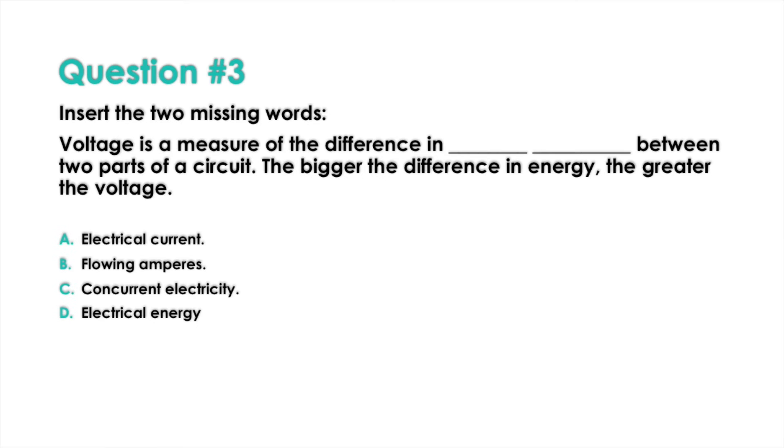Question 3: Insert the two missing words from this sentence. Voltage is a measure of the difference in blank-blank between two parts of a circuit. The bigger the difference in energy, the bigger the voltage.